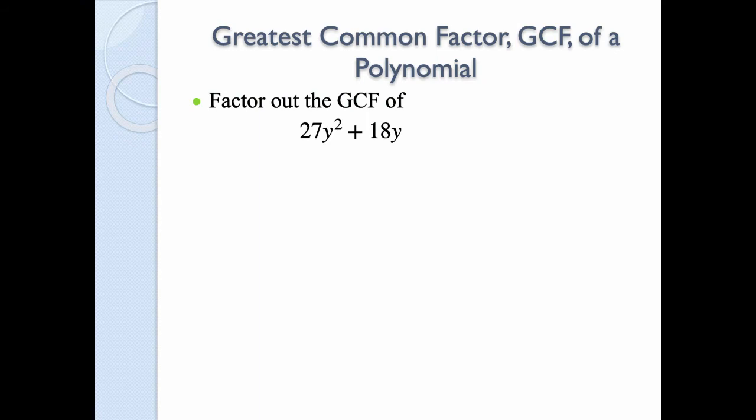To do factoring by grouping, one of the things we need to be able to do is find common factors — the greatest common factor of a polynomial. Factors are things that when multiplied get to a larger term. When we find the GCF, we want to divide these things out of our terms. So what is the largest number and the largest variable that is common to all the terms we have?